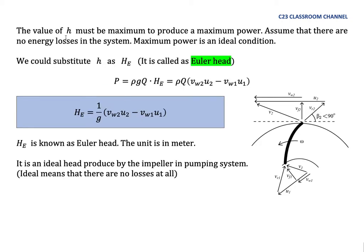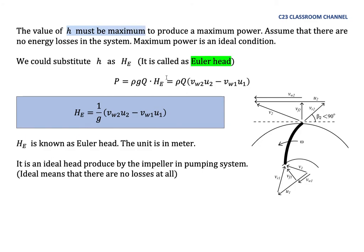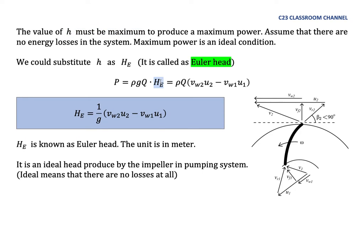The value of H must be maximum to produce a maximum power. Assume that there are no energy losses in the system. Maximum power is an ideal condition. We could substitute H as HE, it is called Euler head. Because there is no losses here, there is no energy losses, and the H is the maximum. So the Euler head here is actually the theoretical head of the pump.